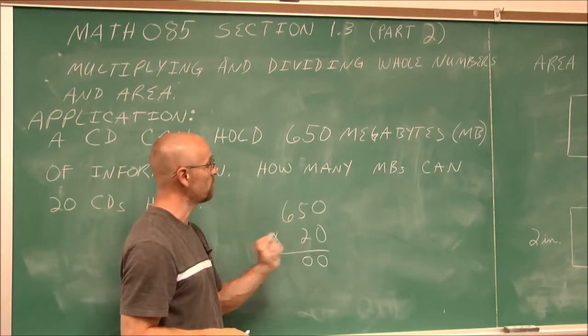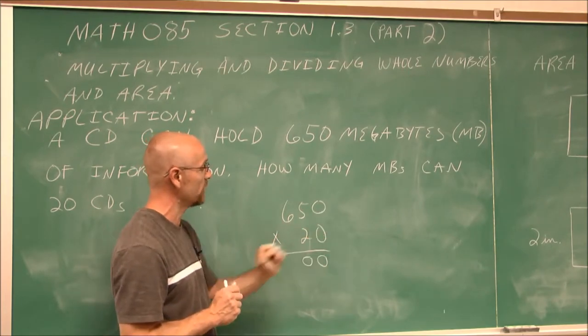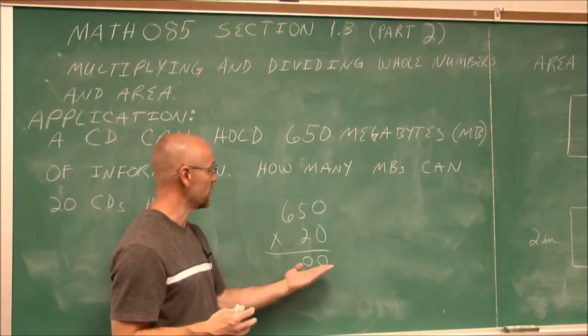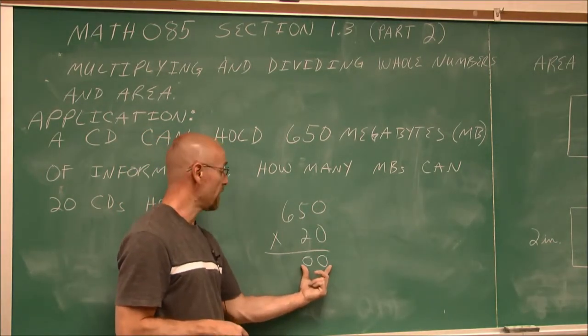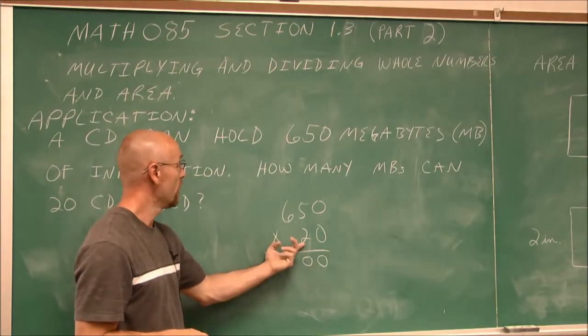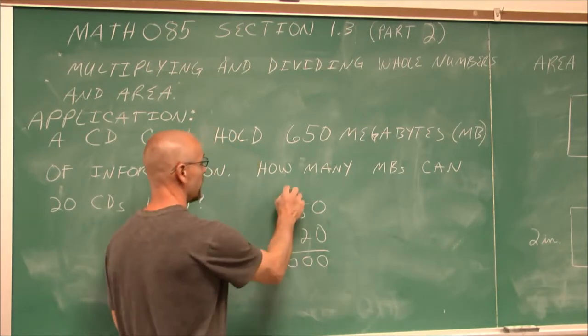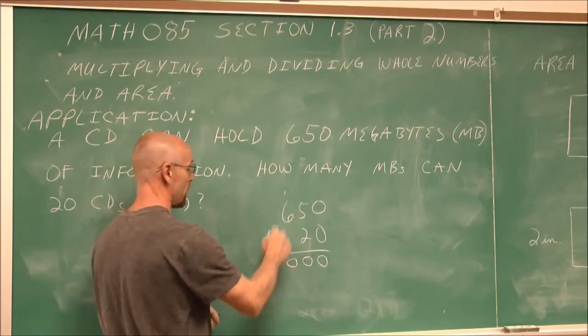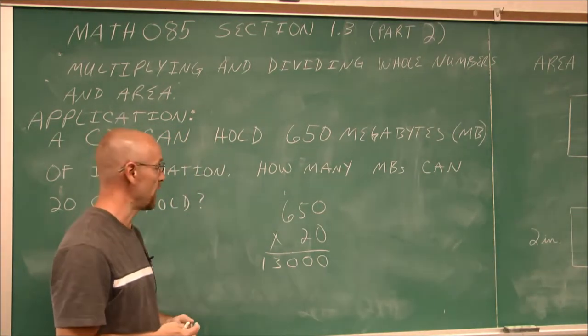So essentially what I'm going to do is a little shortcut and say I have a factor of 0 here and 0 here. That's 0 times 0. Well, that's going to give me 0. But since I have two of them, I want two 0's here. And then I'm going to start my multiplication by the non-zero number. If I go 2 times 5, I get 10. And I carry the 1. 2 times 6 is 12, plus that 1 is 13. 13,000 is the value I get.